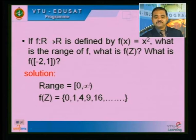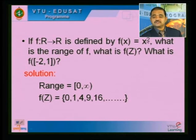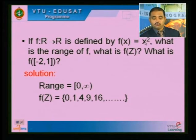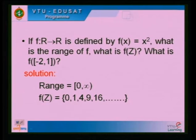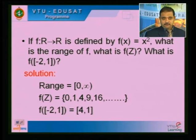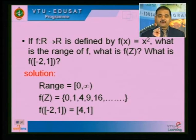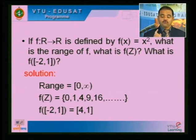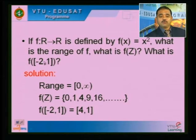For F({−2, 1}): substitute x = −2 into x², giving (−2)² = 4. For x = 1, 1² = 1. Therefore F({−2, 1}) = {4, 1}.